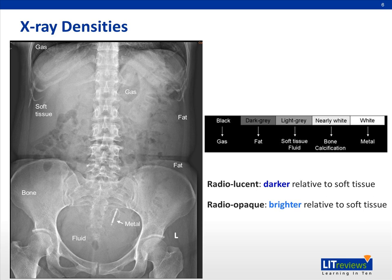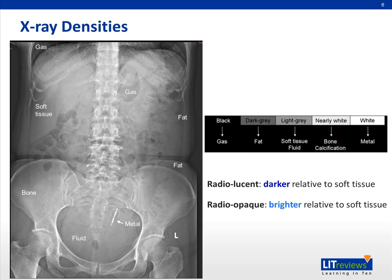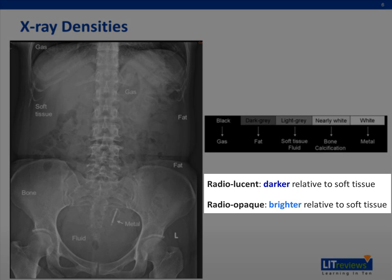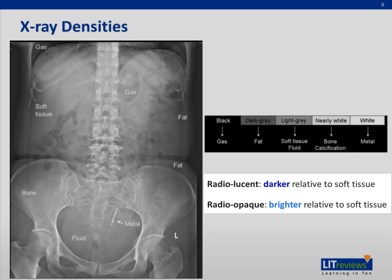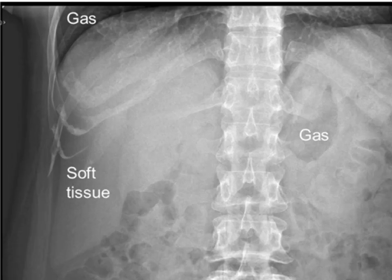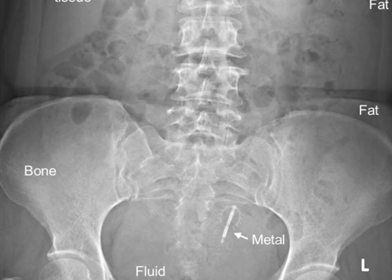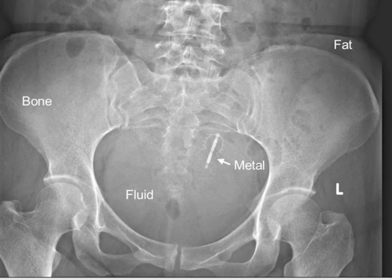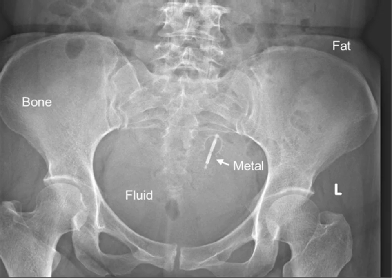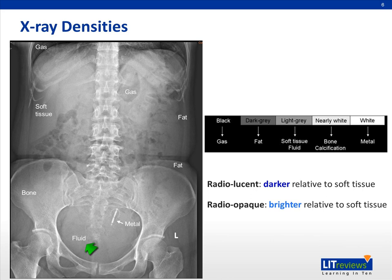There are five different types of radiographic densities. We have gas, which is the lightest and appears as black. And then we have metal on the other end, which is the densest and appears as white. In general, we describe things on radiographs as radiolucent when they are darker relative to soft tissue, or radio-opaque when they are brighter relative to soft tissue. For example, the lungs are radiolucent relative to the liver, and metal or bones would be radio-opaque relative to the muscles. One thing to take note is that fluid will appear similar in color to soft tissue, because they are of the same or similar density on radiographs.